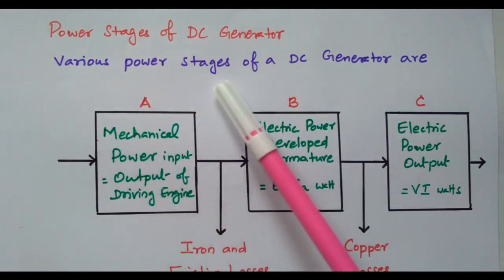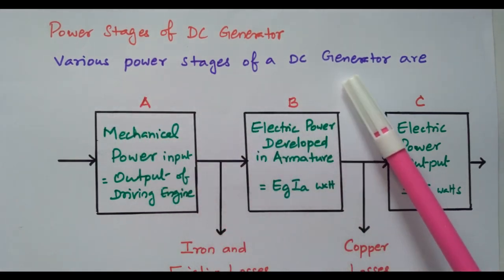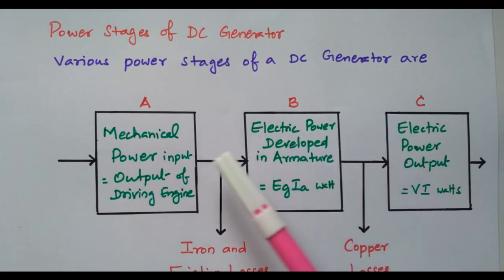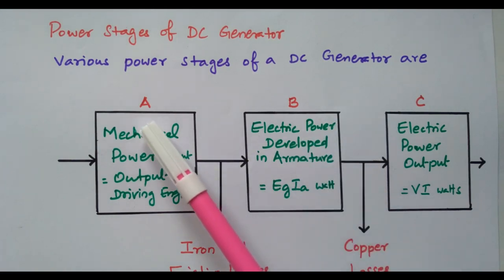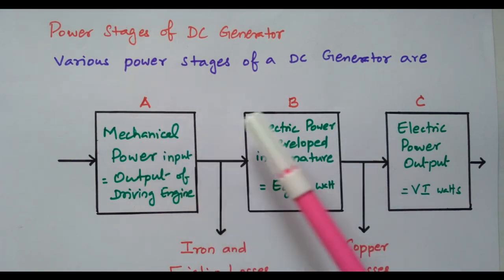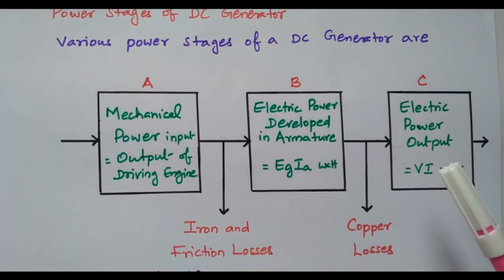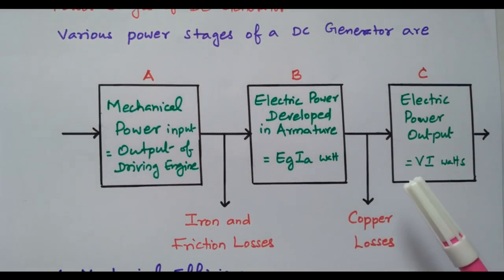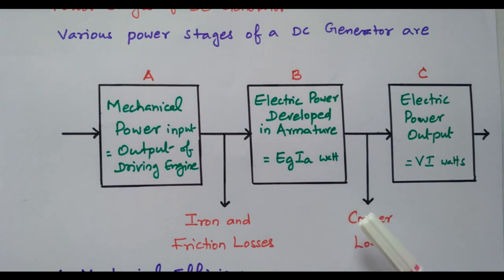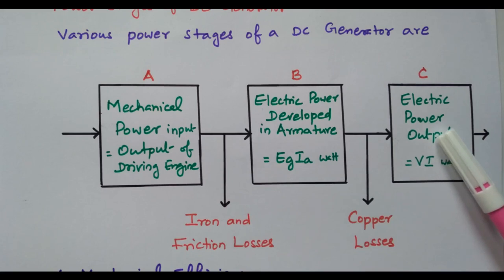The various stages of a DC generator are shown below. It is classified into three stages: A, B, and C. The first stage — a DC generator is converting mechanical energy into electrical energy, that is, mechanical rotation is converted into electrical output.